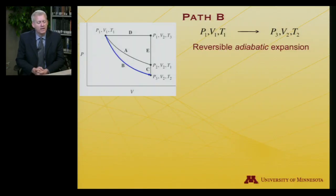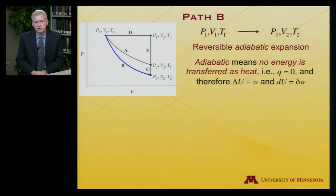Now let's consider path B. Path B is a reversible adiabatic expansion. So what does adiabatic mean? Adiabatic means no energy transferred as heat. So if you like, I perfectly insulate the system from the surroundings. Heat is not allowed into the system from the surroundings. That is, Q is equal to zero. There is no heat transfer. As a result, delta U is equal to W, and dU is equal to delta W.